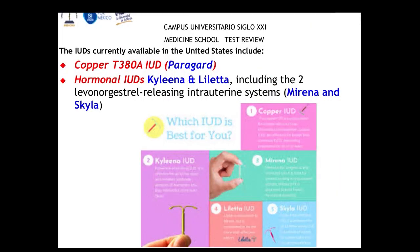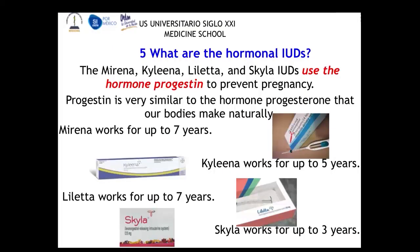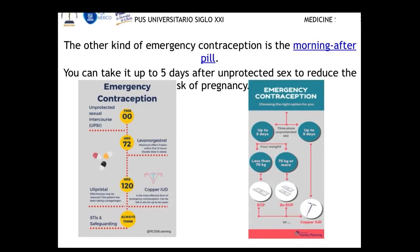The hormonal IUDs last different numbers of years depending on the brand. The morning-after pill can also be used as an emergency contraception to prevent pregnancy. When examining women using IUDs, we must be aware of risks including migration of the intrauterine device from its normal position.